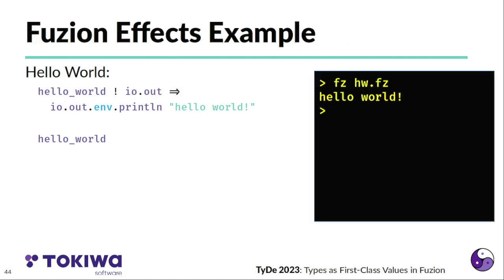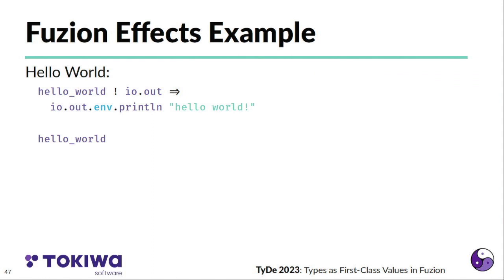Now if we run this, we of course see the output because io.out print line prints this to standard out. We can now analyze also our application. And the static analysis determines that this application requires the io.out effect. And so one thing that's special about io.out is io.out has a default handler that is installed if there's nothing done explicitly. That's why we don't have to do anything special here. But what we could do is we could run this with a user defined handler as well, which is what I want to show you now.